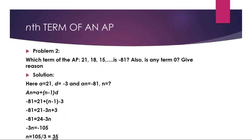Next problem: Which term of the AP 21, 18, 15, ... is minus 81? Also, is any term of this AP equal to 0? Give a reason for your answer. The sequence 21, 18, 15, ... is an arithmetic progression and we need to find which term equals minus 81.